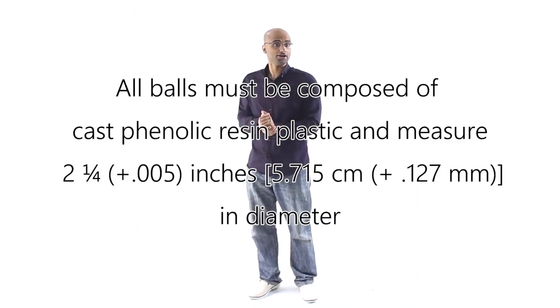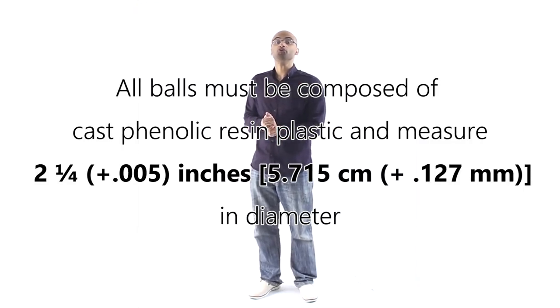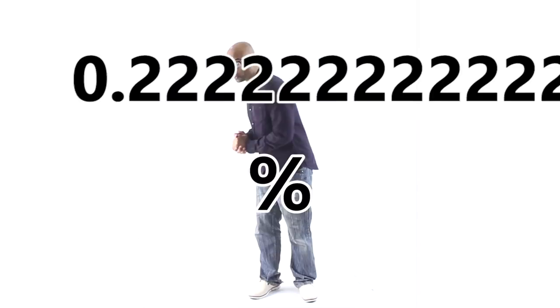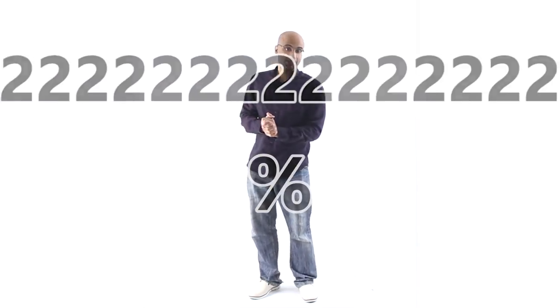The World Pool Billiard Association says that a billiard ball must measure around 5.715 centimeters in diameter with an allowable error of around 0.127 millimeters. This gives us a margin of error of around 0.222... percent. It keeps going on forever.